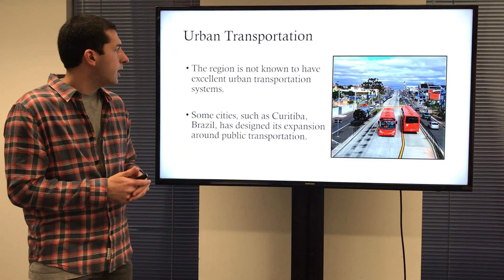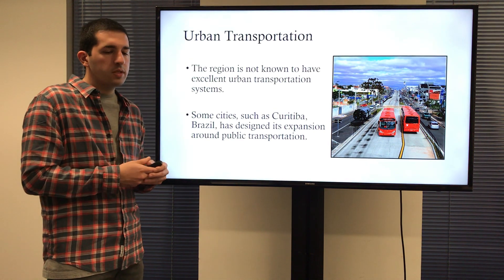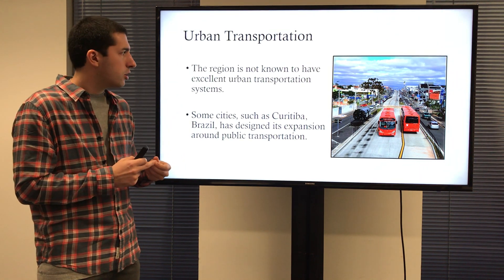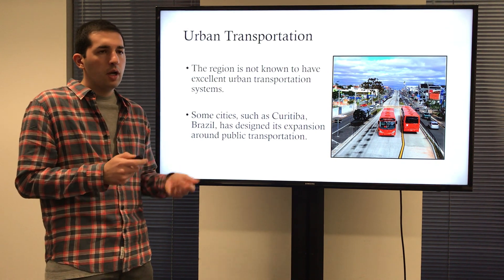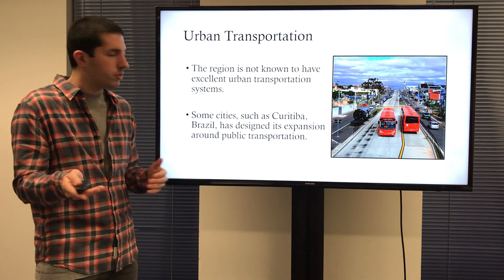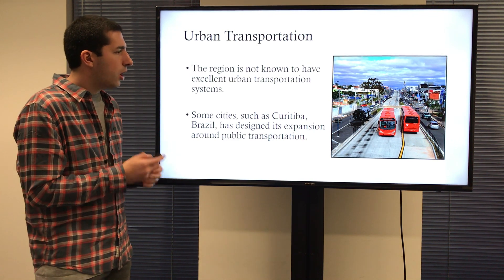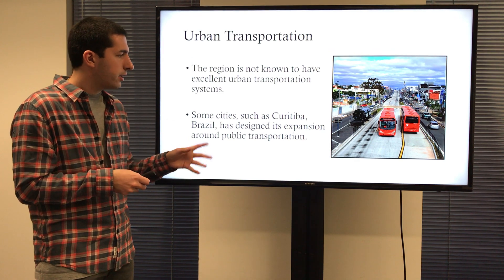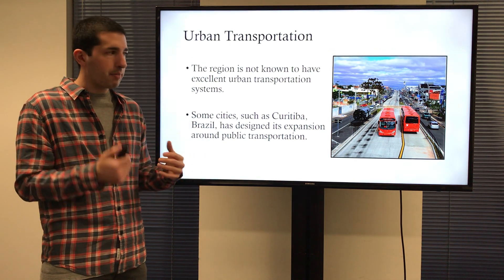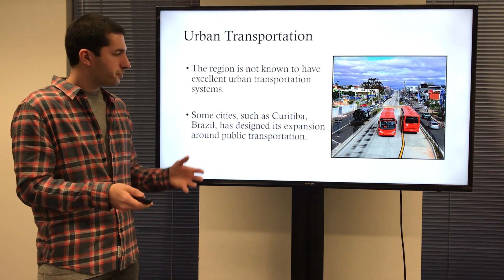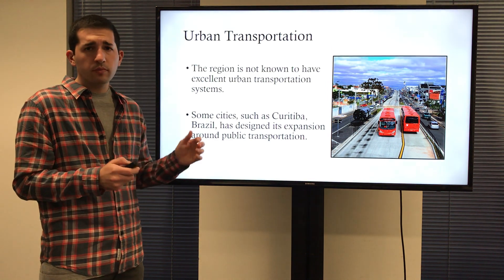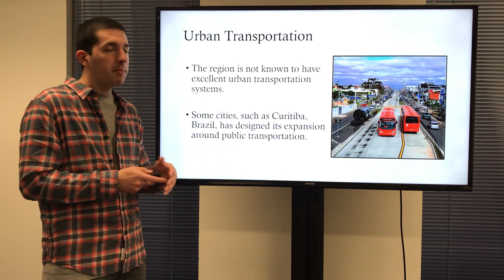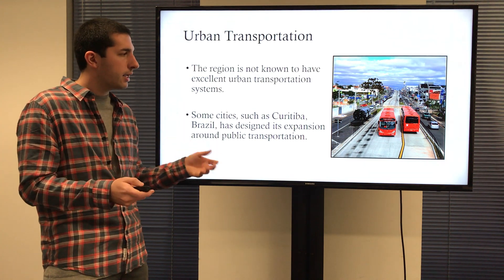Urban transportation gets a bad mark for this region — not particularly great in urban infrastructure. Many areas have serious traffic and pollution problems. However, some areas had great planning skills. The example here is Curitiba, Brazil, which in 1968 had a master plan that centered its entire growth around public transportation — making thousands of runs each day and moving millions of people. It's a template for smart urban planning for the region.